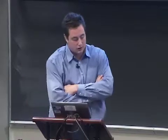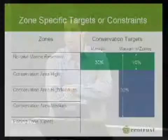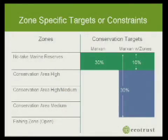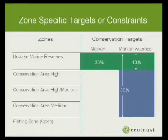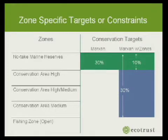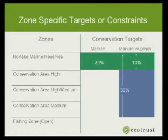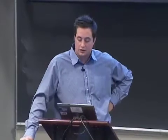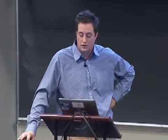For zone-specific targets, this was purely an exercise — no one said you needed 30% of any feature. We set 30% overall. With standard Marxan, that 30% can be in a reserve or open area. With Marxan with zones, we wanted 30% overall but required at least 10% to be in the reserve. It will be obvious that having only 10% in reserve is more cost-efficient, but the point is that it gives you more flexibility.